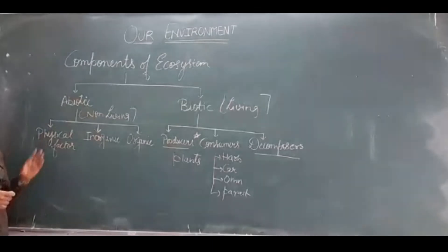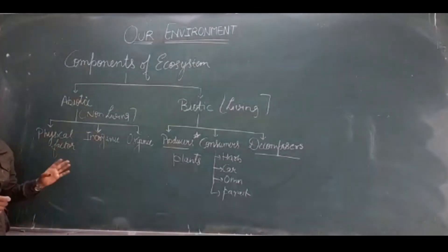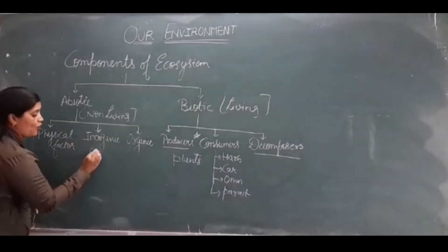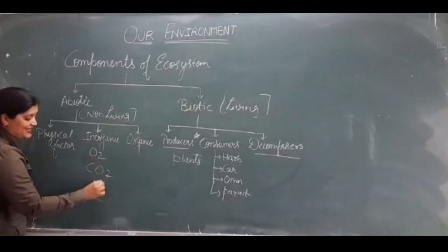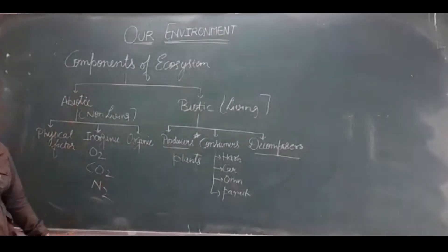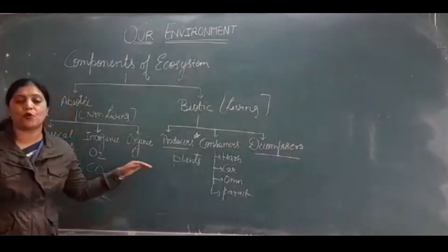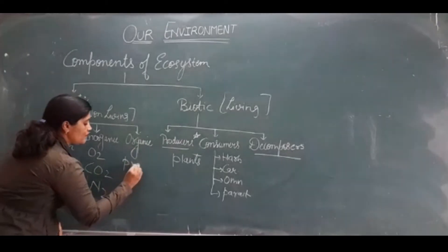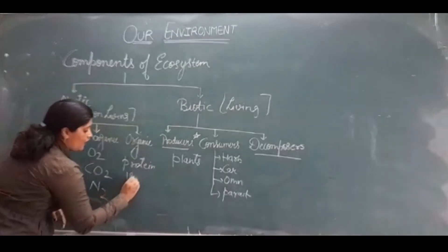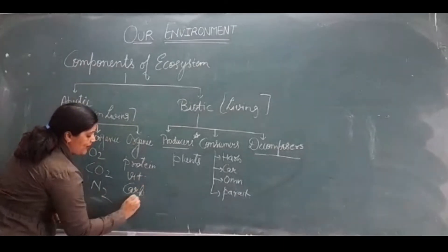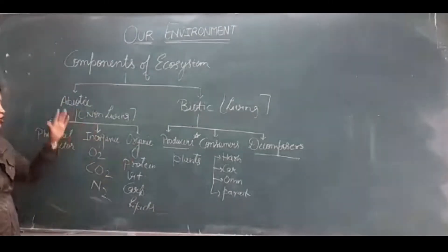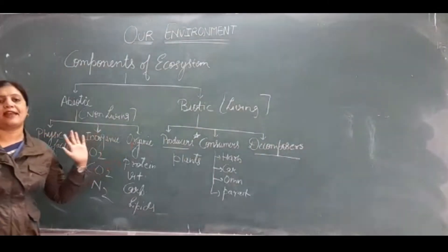The abiotic or non-living components are physical factors which we have already discussed, like air and water, and inorganic substances like oxygen gas, carbon dioxide gas, and nitrogen gas. There are also organic substances in abiotic ecosystems, like protein, vitamins, carbohydrates, and lipids — these are all organic substances categorized under abiotic components. So three abiotic components: physical, inorganic, and organic substances.